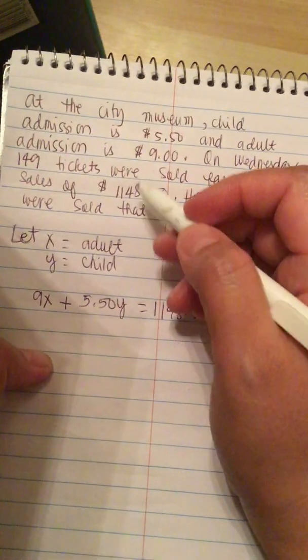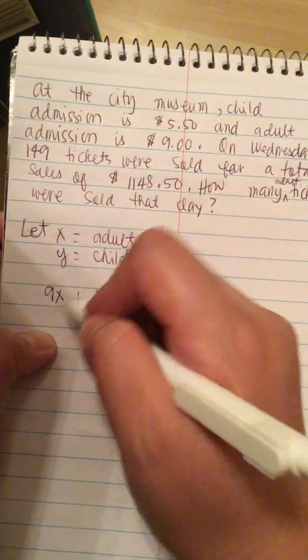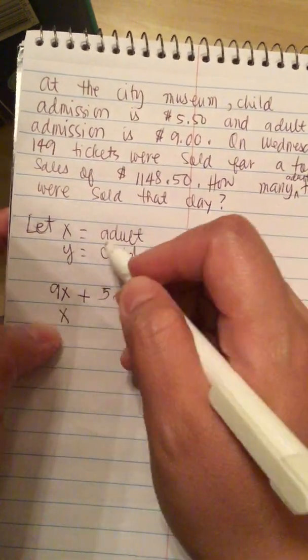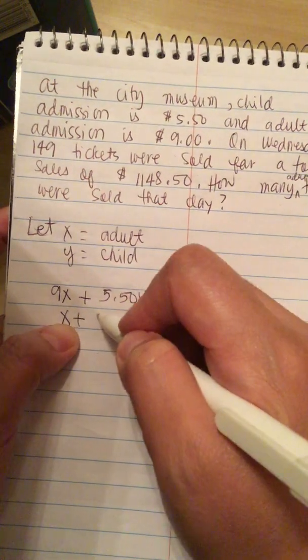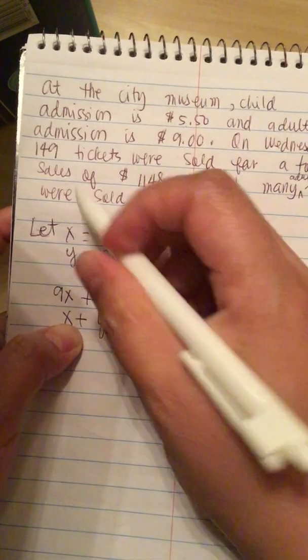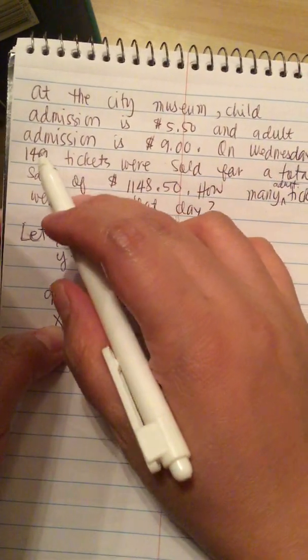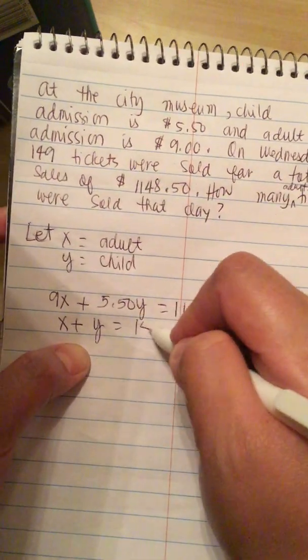The other equation is going to be the adult ticket plus the child ticket equals the total number of tickets sold, which is 149.